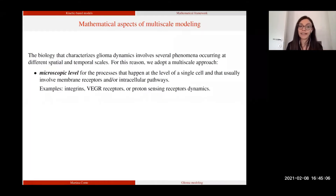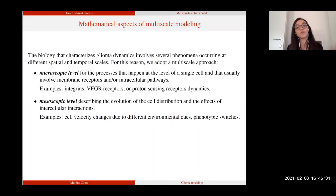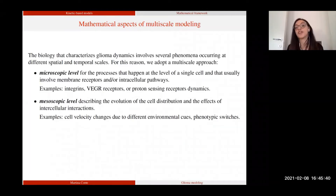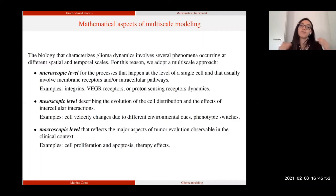The first level is the microscopic level, at which we model the detailed processes that happen at the level of a single cell — for instance involving cell membrane receptors or the effect of intracellular pathways. In the different settings, we mainly look at integrin dynamics, VEGF receptors, and proton-sensing receptor dynamics. The second level is the mesoscopic level, at which we describe the evolution of the cell distribution considering the effect of different intracellular interactions on the cell population — for instance, we model cell velocity changes due to different environmental cues, and also phenotypic switches between different cell populations that depend on microenvironmental conditions. Finally, the macroscopic level is derived from the lower levels and reflects aspects of tumor evolution observable in the clinical context, like tumor cell proliferation or the effects of different therapeutic treatments on the tumor mass.